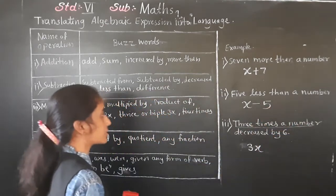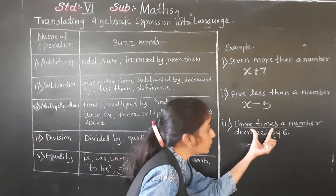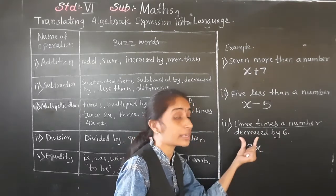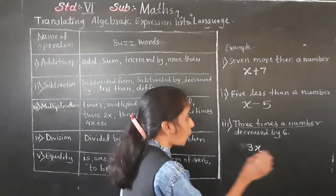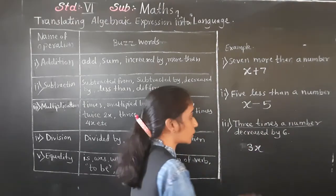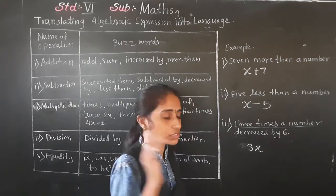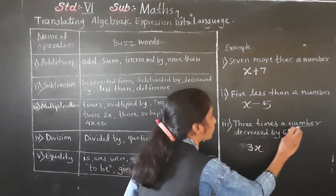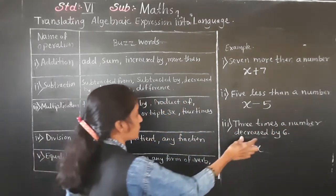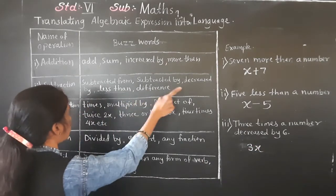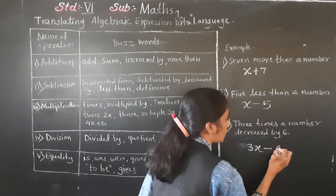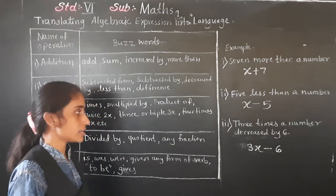'Three times a number decreased by six.' Here two operations are given: multiplication (three times) and subtraction (decreased by). So three times a number gives three x, and decreased by six means three x minus six.